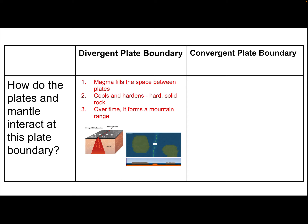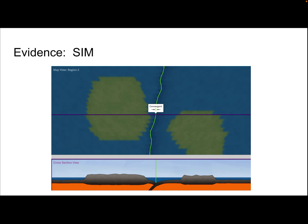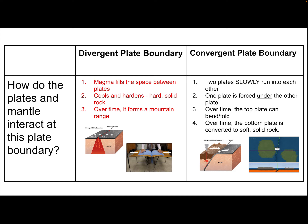It also forms volcanoes within those mountain ranges. For the convergent plate, again using evidence from the article and from the sim, we know that the two plates slowly run into each other. Here, one plate is forced underneath the other plate, and over time the top plate can bend and fold. Number four: over time, the bottom plate is converted to soft solid rock — it goes down, breaks apart, and becomes part of the magma.